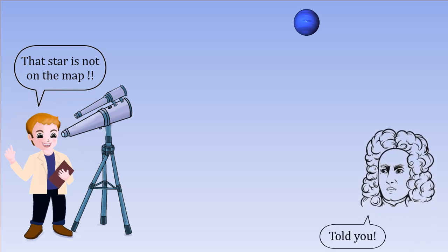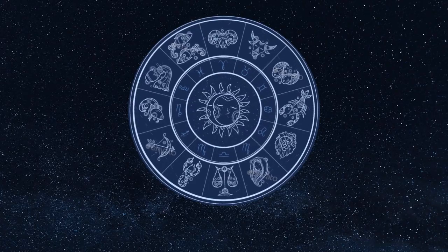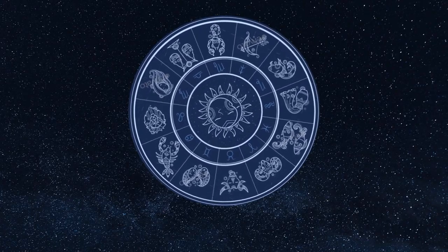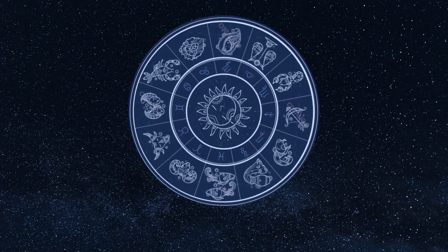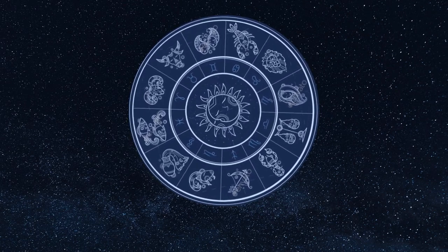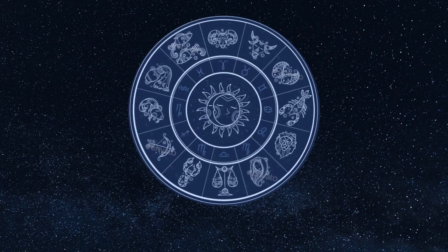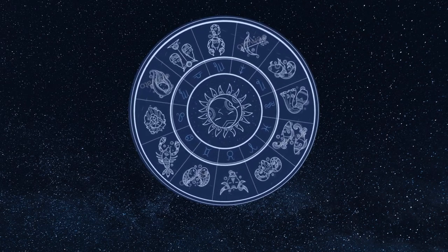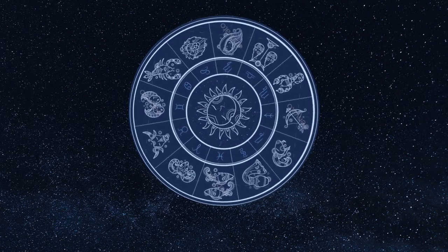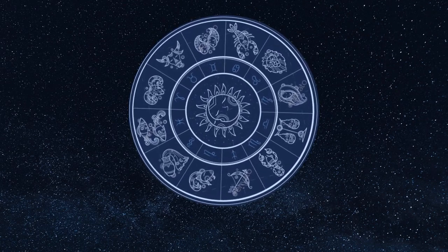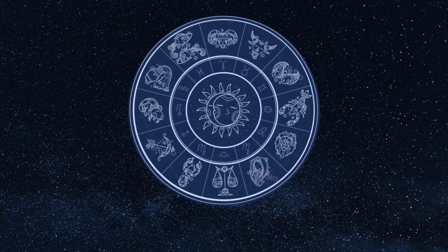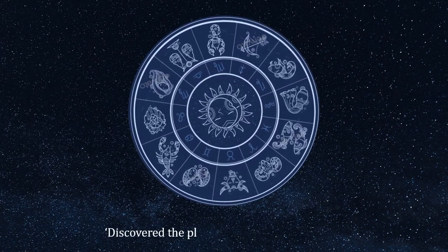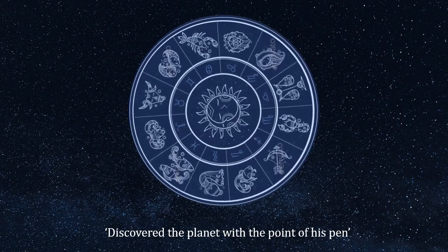The discovery of Neptune was a watershed moment in the history of astronomy. For the first time in human history, the existence of a celestial body was predicted through tools of modern science. The tyranny of planetary alignment no longer dictated the human condition. Rather, the clockwork of celestial mechanics is governed by tools of modern science. Le Verrier was the person who had discovered the planet with the point of his pen.